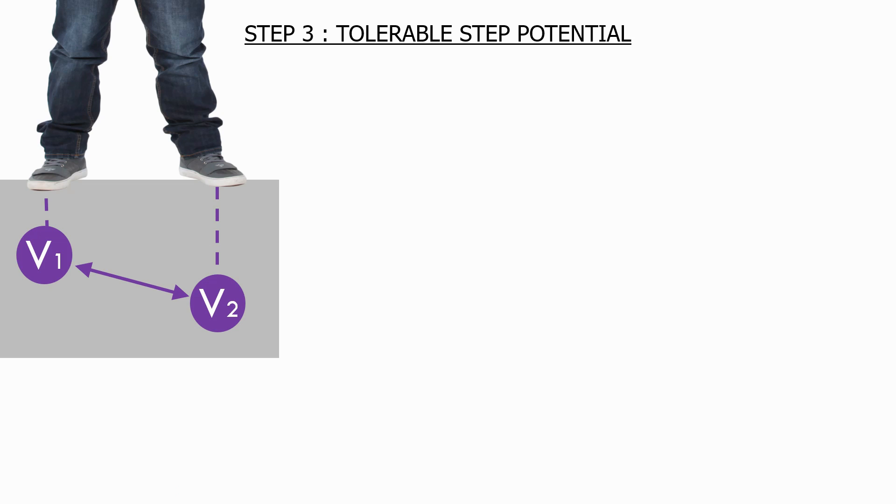Next, let's look at the tolerable step potential. As we have seen previously, the step potential is caused by a voltage difference between a person's feet, which occurs when ground fault current flows through the ground underneath the person involved.